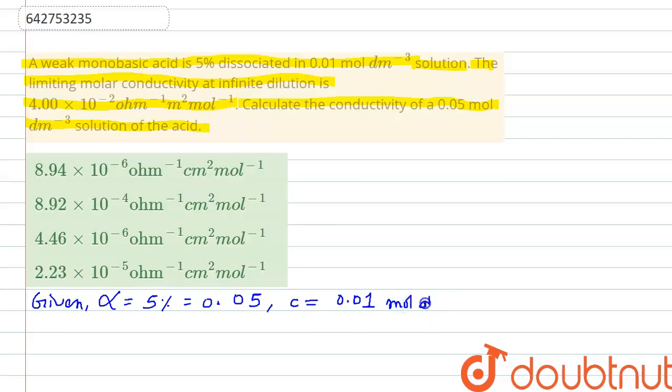Now our K_α, the dissociation constant, is equal to c·α². So we will substitute the values to find the value of K_α, which is the dissociation constant. It will be 0.01 × (0.05)².